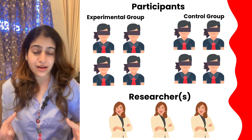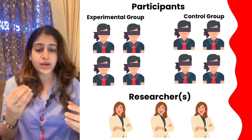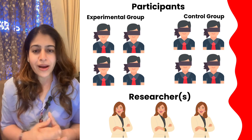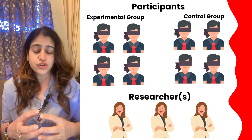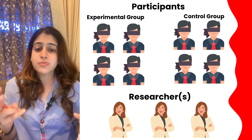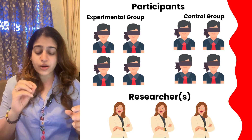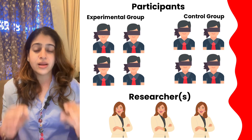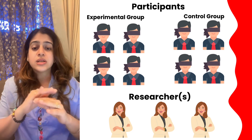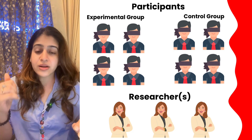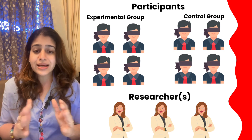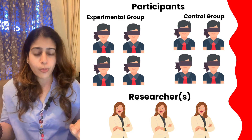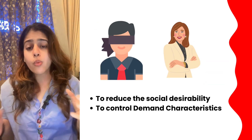So what exactly is a single blind study? A single blind study is when a researcher is conducting research with various conditions — experimental condition and control condition. There are participants in the experimental group and other participants in the control group. In a single blind study, the participant does not know which group they are in — they are blind to whether they are in the experimental group or the control group.